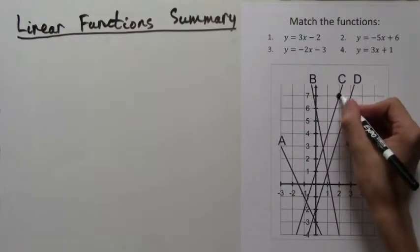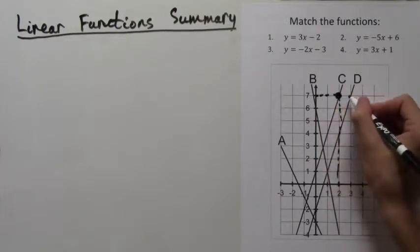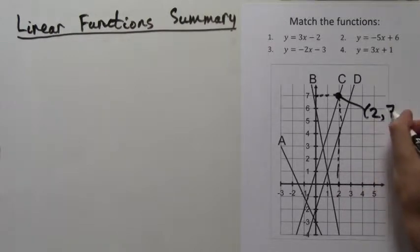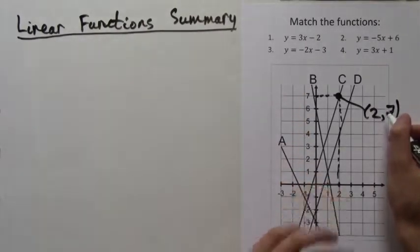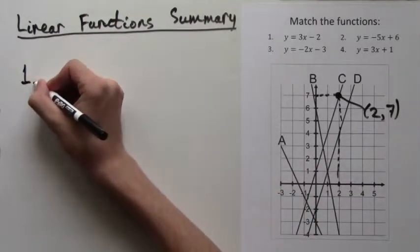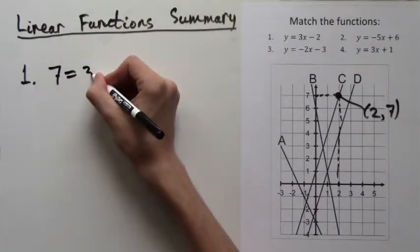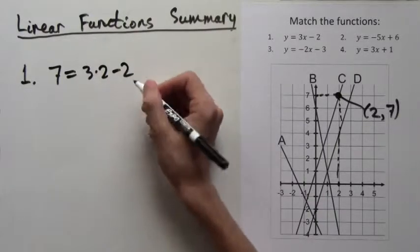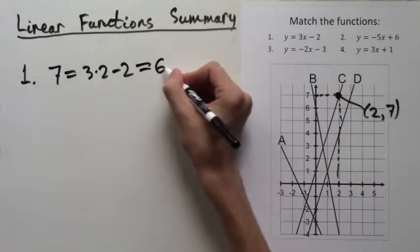Instead of comparing slopes and y-intercepts, we will just take points off of the graph and plug in their coordinates into the corresponding equations. So for example, this point which lies on line C has the coordinate (2, 7). x equals 2, y equals 7. We will try plugging in x equals 2 and y equals 7 into all these formulas.